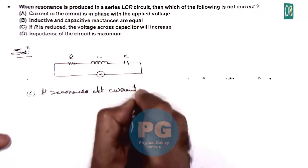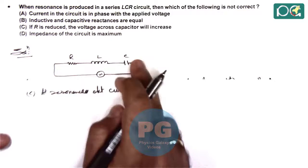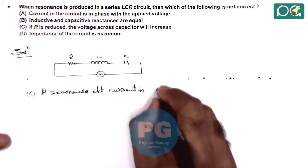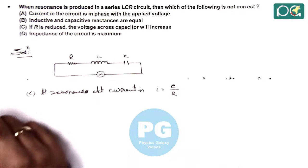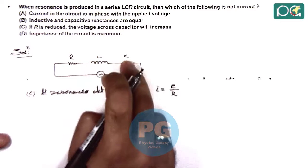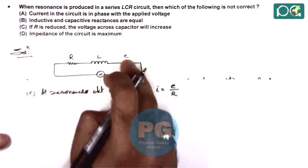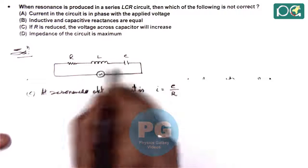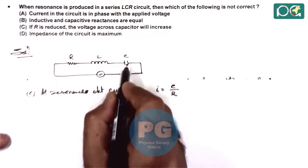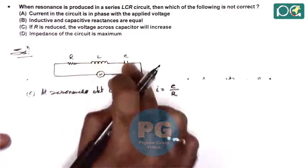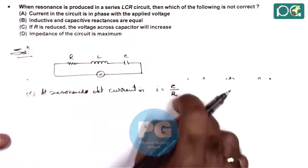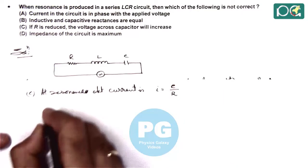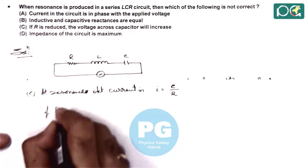as circuit impedance is purely resistive, circuit current we can write as applied voltage divided by R. Because XL and XC which are in opposite phases, they will cancel each other. Because the magnitudes are equal, so here we can write the circuit current is E by R only. So if R is reduced,